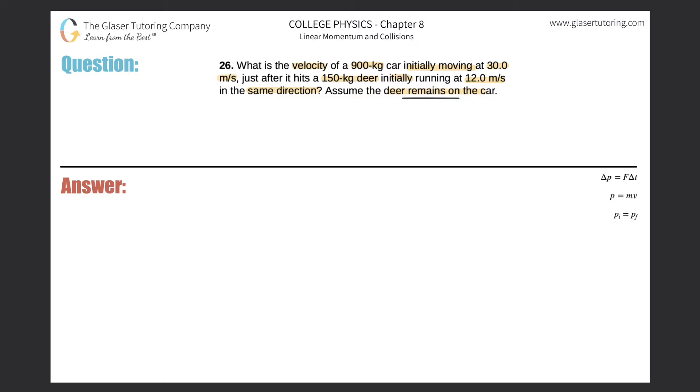So there's a basic formula for inelastic collisions. We can frame it this way, that the momentum of the first object before the collision plus the momentum of the second object before the collision will equal the momentum of the final object taken together.